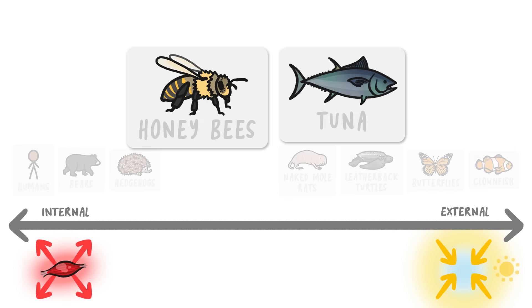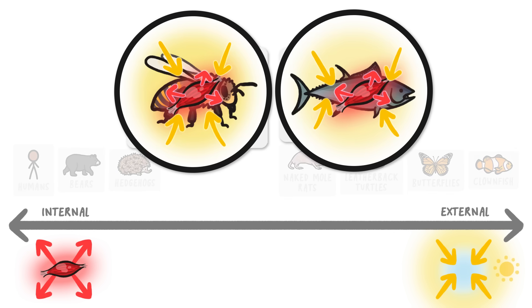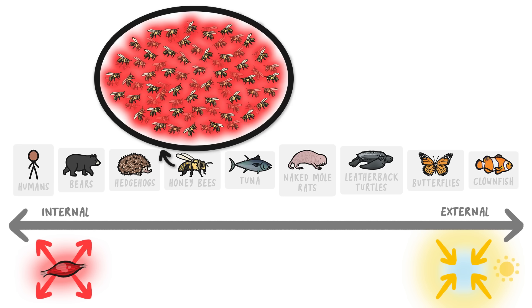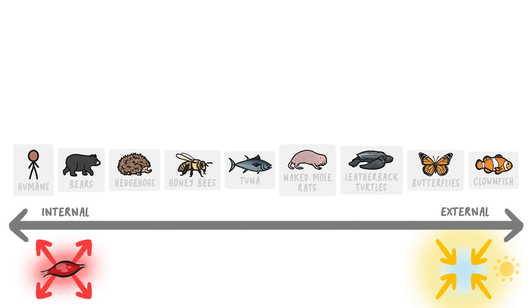Some, like honeybees and tuna, can also use their powerful muscles to generate heat internally, so they go closer to the middle. Honeybees can actually generate so much internal heat that they can collectively cook invading hornets. So how animals generate heat is way less of a split than a spectrum.